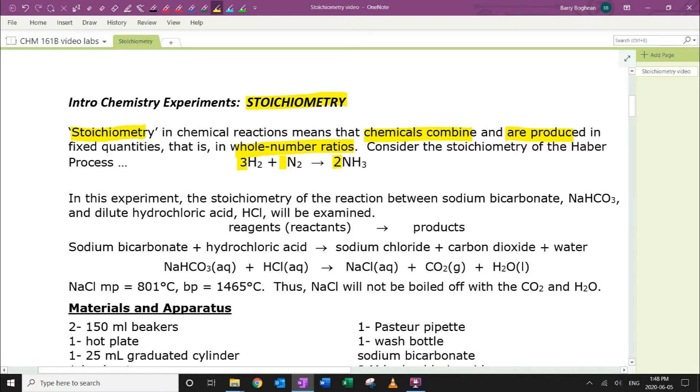When we write chemical equations, we write the formulas of the reactants, the chemicals that react together. Often we call them reagents. We write those on the left-hand side of the arrow. On the right-hand side, we write the formulas of the products.